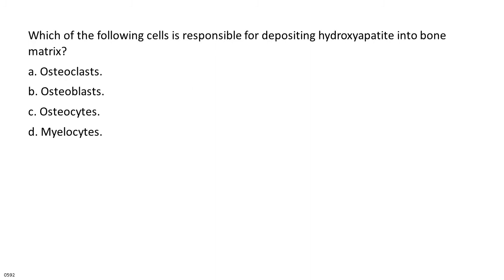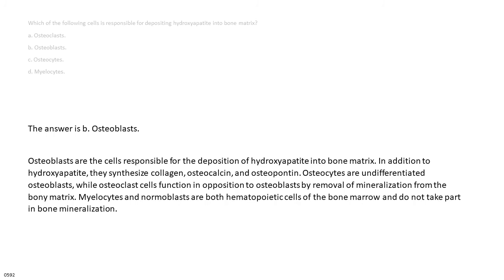Which of the following cells is responsible for depositing hydroxyapatite into bone matrix? A. Osteoclasts. B. Osteoblasts. C. Osteocytes. D. Myelocytes. The answer is B, osteoblasts. Osteoblasts are the cells responsible for the deposition of hydroxyapatite into bone matrix. In addition to hydroxyapatite, they synthesize collagen, osteocalcin, and osteopontin. Osteocytes are undifferentiated osteoblasts, while osteoclast cells function in opposition to osteoblasts by removal of mineralization from the bony matrix. Myelocytes and normoblasts are both hematopoietic cells of the bone marrow and do not take part in bone mineralization.